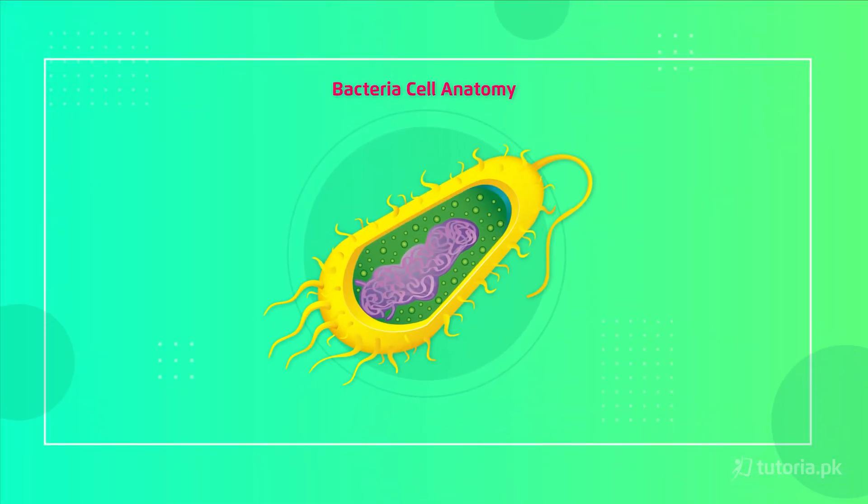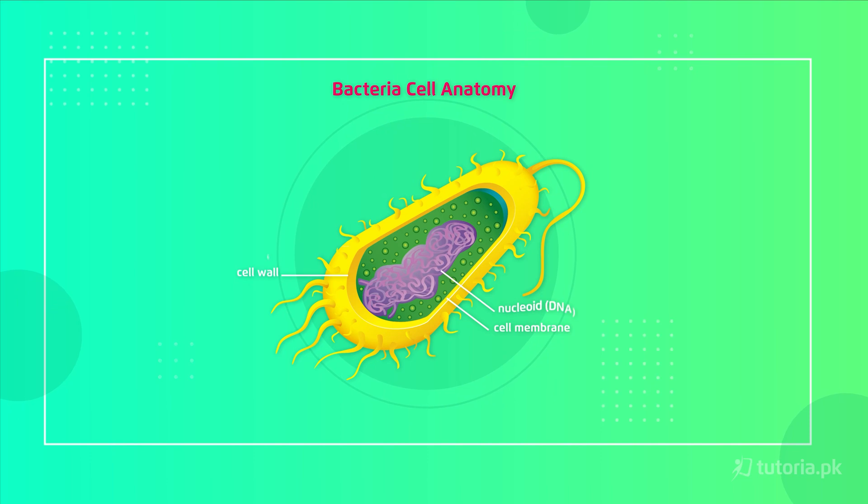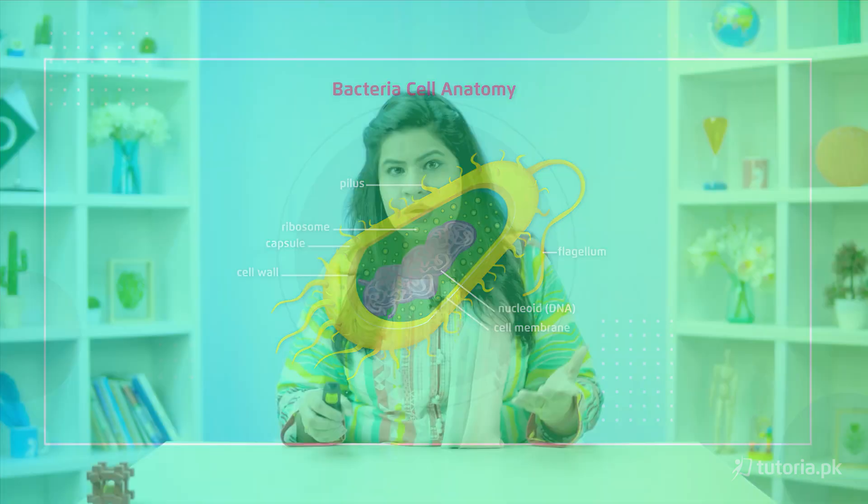After discussing organelles, the chapter explains the differences between eukaryotic and prokaryotic cells. Prokaryotic cells are simple, lack a nucleus, and are smaller in size. These differences are compared with eukaryotic cells. Then the chapter discusses the relationship between cell function and cell structure — how cells are structured in a way that allows them to perform their functions effectively.